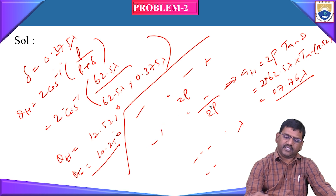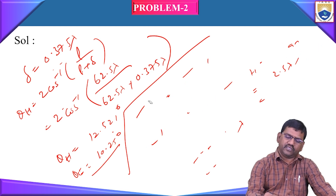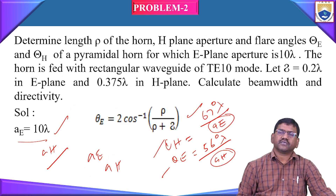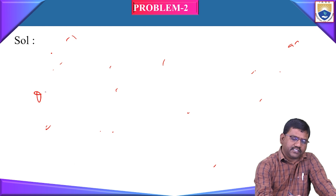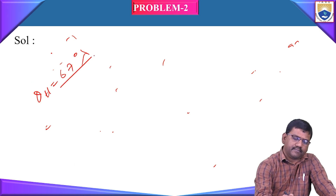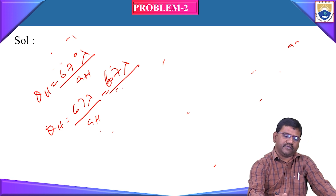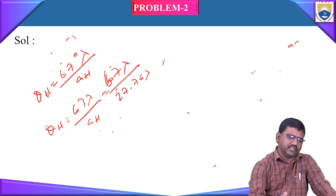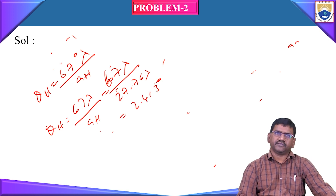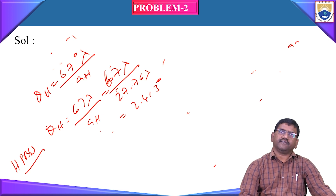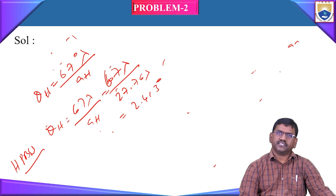Now let us find the beam width and directivity. The half-power beam width in the H-plane is given by theta_h = 67° × lambda / a_h = 67 lambda / 27.76 lambda = 2.413 degrees. This is the half-power beam width in the H-plane.